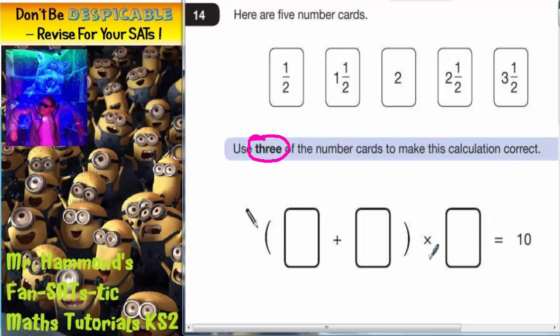Now this question is actually easier to start with this box here. If you multiply by something to make ten, well we're not going to be able to times by any of the fraction ones very easily to make ten, so it's probably going to be this two.